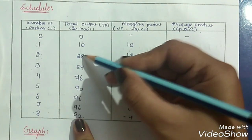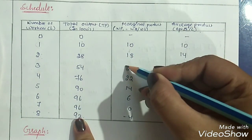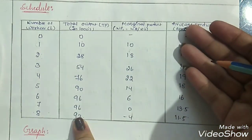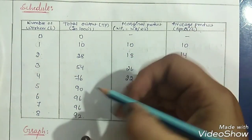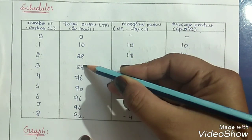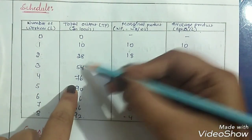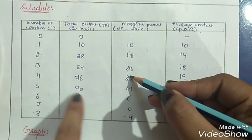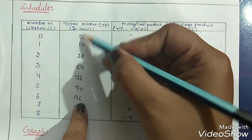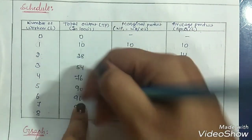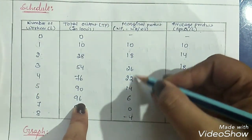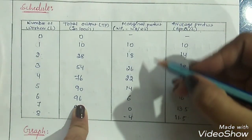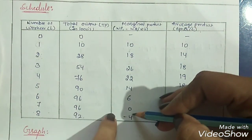The difference between 54 and 28 is 26 units produced in excess. But the difference between 76 and 54 is only 22, so there is a decline in marginal product. This means total product is still increasing, but at a diminishing rate. So marginal product starts to decline and at one certain point it reaches negative.